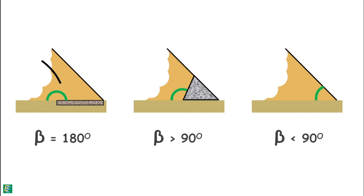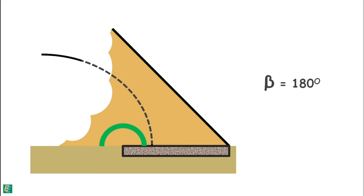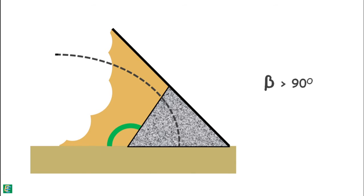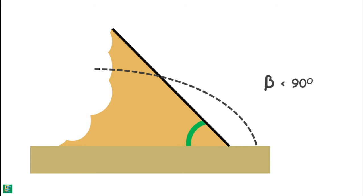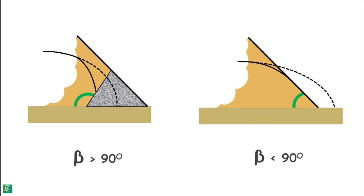The phreatic line meets the discharge face tangentially and does so differently with different types of discharge faces. When beta is 180 degrees, the phreatic line meets the discharge face exactly as the base parabola. When beta is greater than 90 degrees, the phreatic line drops vertically on the discharge face. When beta is less than 90 degrees, the phreatic line meets the discharge face tangentially and extends towards the toe of the dam. So in the latter two cases, an additional correction at exit is required.